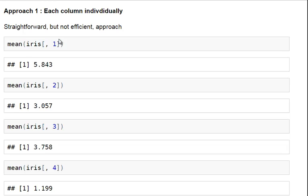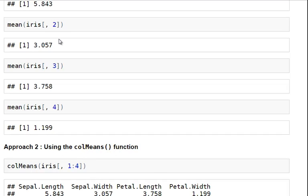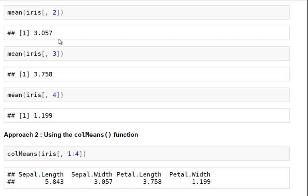Likewise, we could do for all the other commands there, mean of IRIS column two, mean of IRIS column three, mean of IRIS column four. That's how we might go about doing it there.